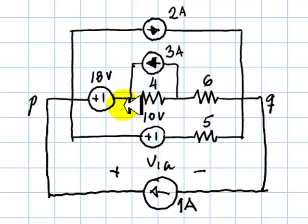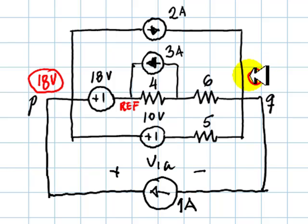I choose my reference node here. The voltage of node P is known, 18 volts is not an unknown, and we are left with node 1 and node 2.